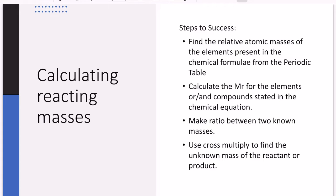Next, you need to be able to make a ratio between two known masses — I'll show you how later. And lastly, you will need to be able to use cross multiplication to find the unknown mass of the reactant or product. I'll show you how as well.